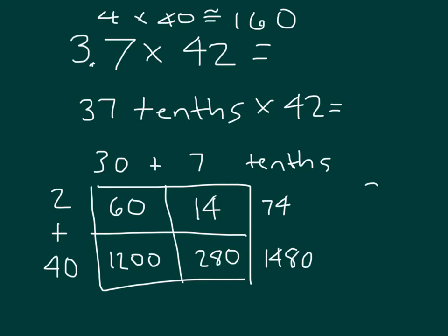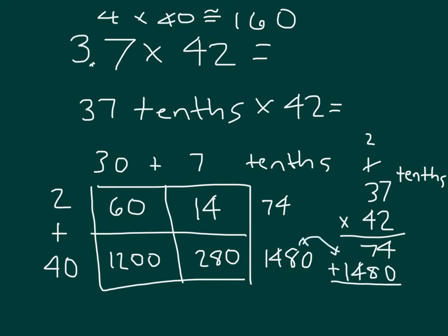Looking at this with the standard algorithm, we have 37, and remember it's tenths, times 42. 2 times 7 is 14, regroup a 1. 2 times 3 is 6, plus 1 is 7. I will place a 0. 4 times 7 is 28, regroup a 2, and 4 times 3 is 12, plus 2 is 14. Those are the partial products that match my area model.